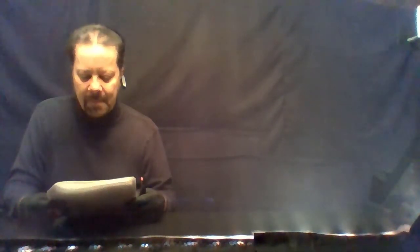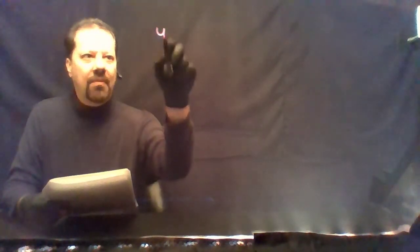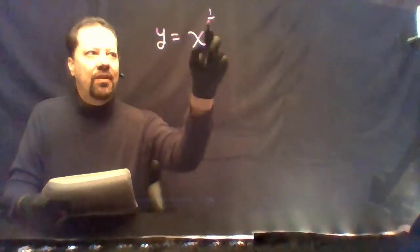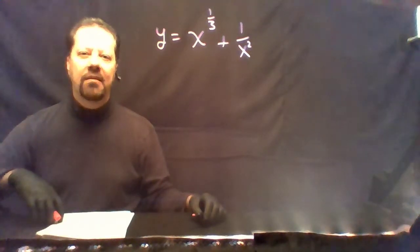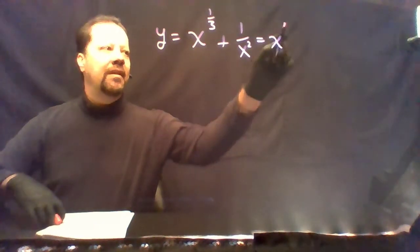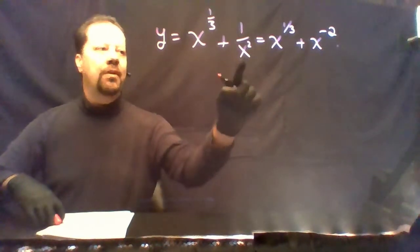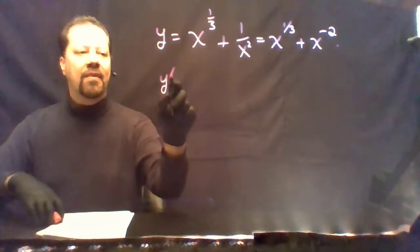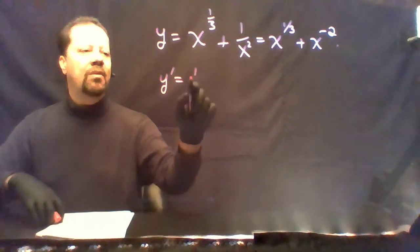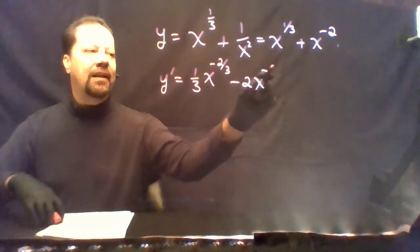Next, we have a sequence of derivatives to calculate. We'll start simply and work our way through. First, y equals x to the 1/3 plus 1 over x squared. Before calculating the derivative, rewrite this as x to the 1/3 plus x to the negative 2 — move it across the division symbol and change the sign. The derivative is then 1/3 x to the negative 2/3 minus 2x to the negative 3.